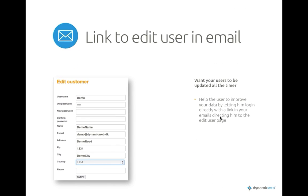Another email marketing feature — requested by users — is the ability to create a link for editing a user profile. Instead of just making a link in the email and having the user go to a page where they need to log in, we now have a token you can send with the link so the user will be automatically logged in on the website. This should increase usability significantly for users wanting to edit their profile.